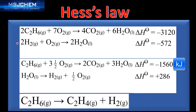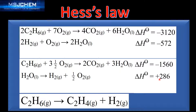Looking at the second equation, we have two moles of hydrogen reacting with one mole of oxygen to form two moles of water. In the final equation we need hydrogen on the right hand side, so I've reversed and halved this equation, giving one mole of water producing one mole of hydrogen gas and half a mole of oxygen. Because I've reversed and halved it, I reverse the sign and halve the value, giving plus 286 kilojoules.